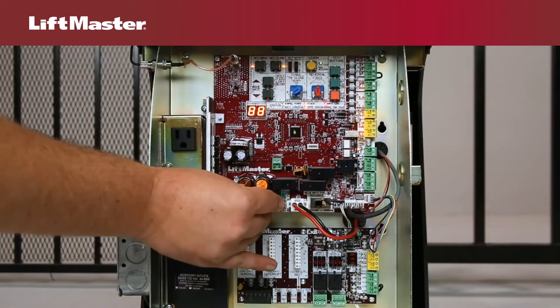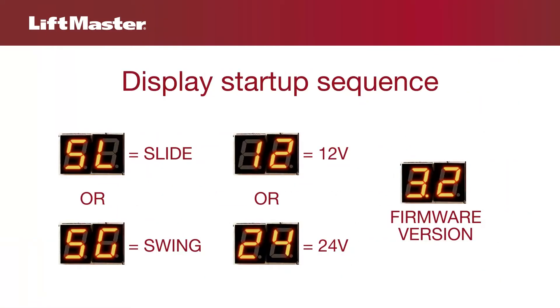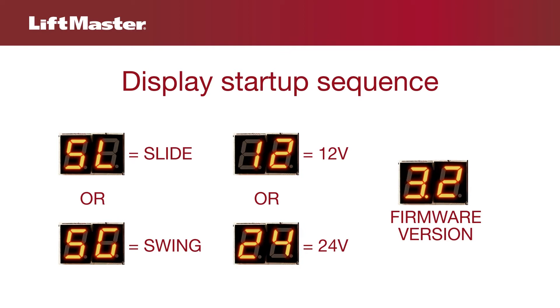When you turn on the operator, the diagnostic code display will show SL or SW for a slide or swing operator, 12 or 24 for a 12-volt or 24-volt operator, and the firmware version.